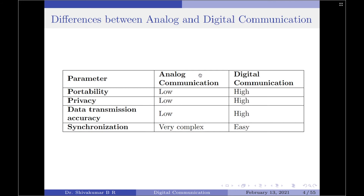Analog communication systems suffer from synchronization problems and therefore require complex hardware to provide proper synchronization between transmitter and receiver. On the other hand, digital communication systems provide synchronization between the transmitter and receiver with a lot of ease. That is about the differences between analog and digital communication. Thank you for watching, have a good day.